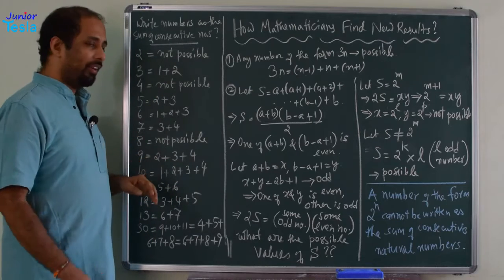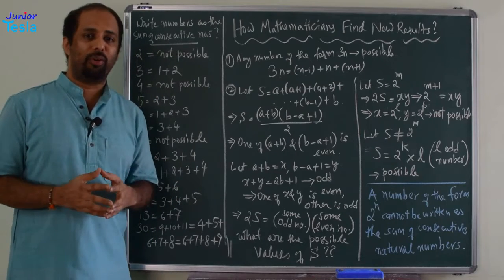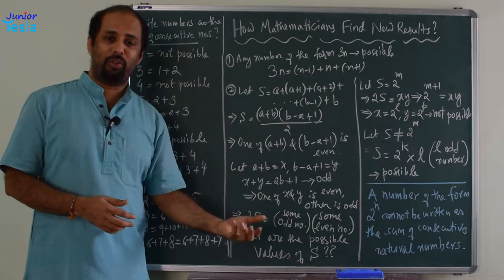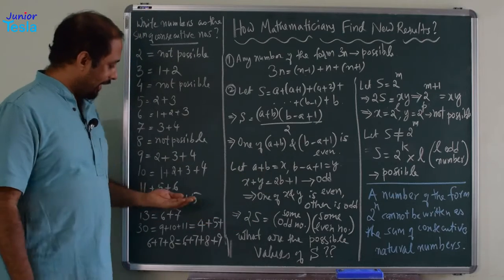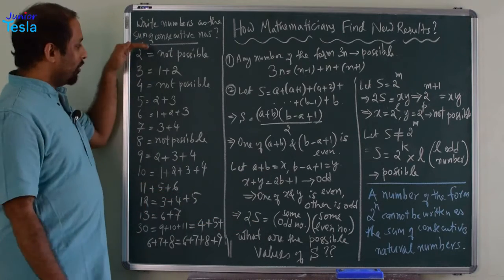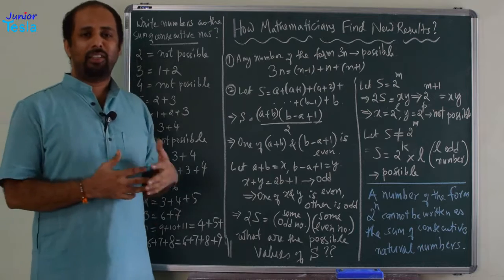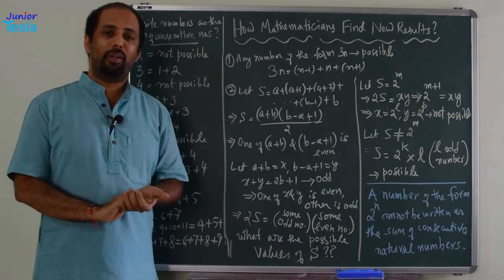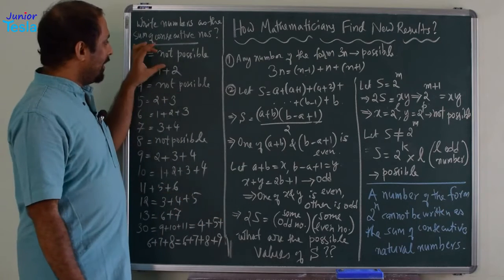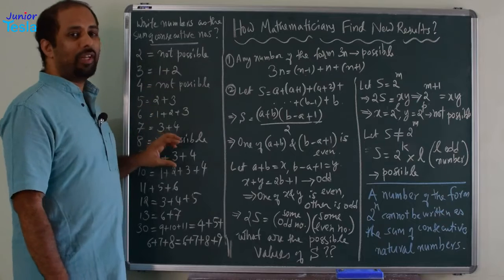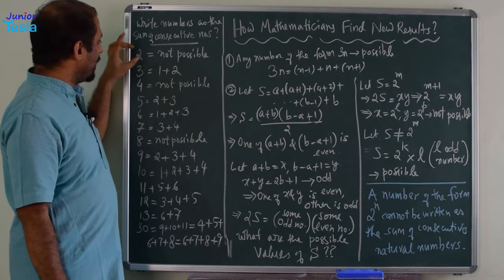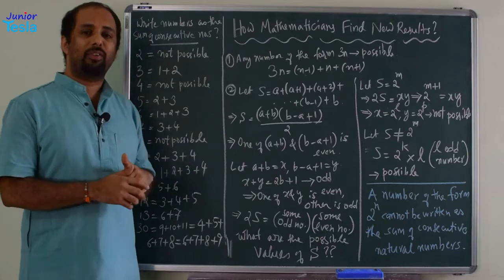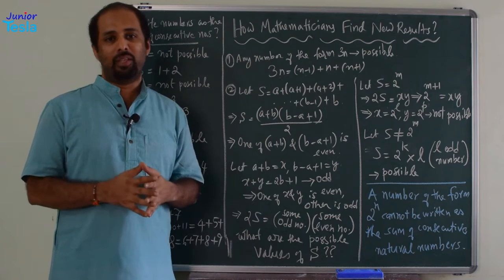9: I have taken 2 plus 3 plus 4. Then 10: 1 plus 2 plus 3 plus 4. Then 11: 5 plus 6. So, you can write so many numbers, hundreds of numbers, as sum of consecutive natural numbers. But in only some places we find difficulty — as we found here with 2, 4, and 8. In these three cases, we could not write it as sum of consecutive natural numbers.